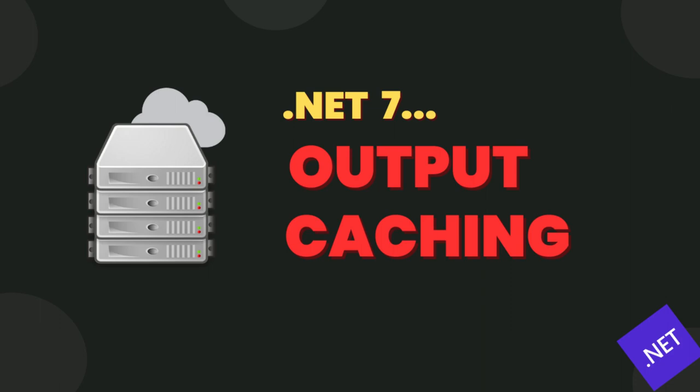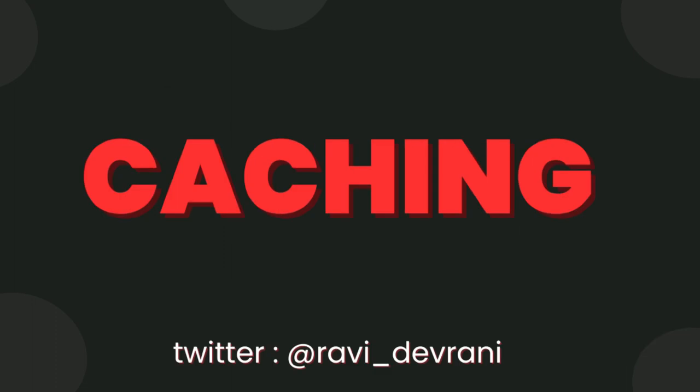Output caching middleware was introduced in .NET 7 and is used to enable caching in your application. But let's understand what caching is first.